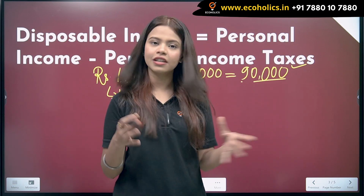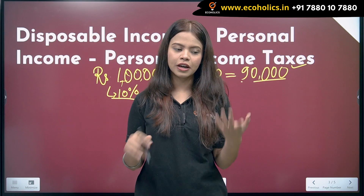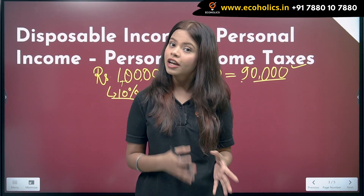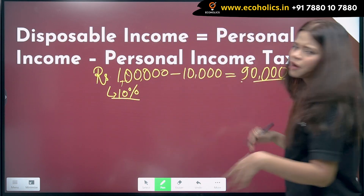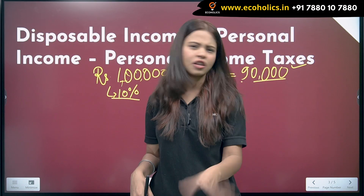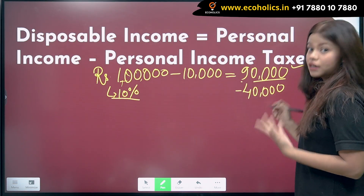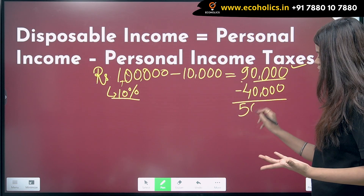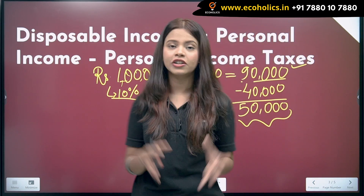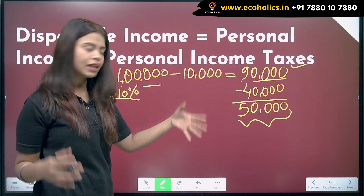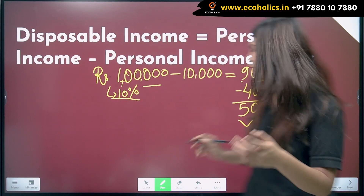Now, what is your discretionary income? From your disposable income, you minus your living expenses — which include rent, education, health, and extracurricular activities. For example, if monthly living expenses are forty thousand rupees, you subtract that from ninety thousand, and you are left with fifty thousand rupees. That fifty thousand is your discretionary income.